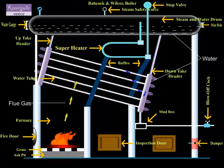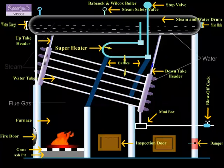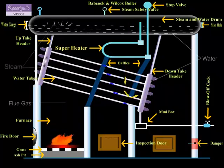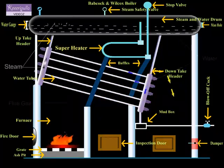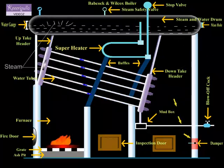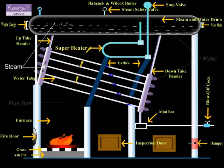The working of the Babcock and Wilcox boiler can be easily understood by examining the flue gas circulation. The flue gas circulation is indicated in the figure as a yellow arrow.